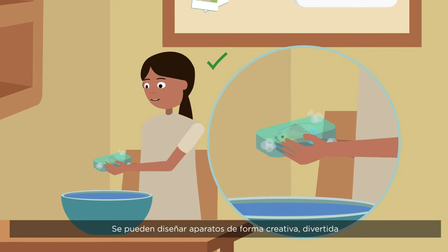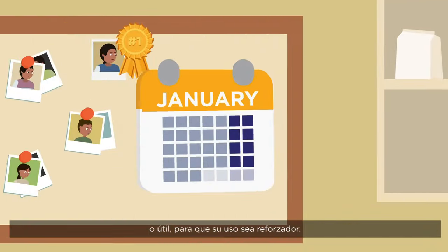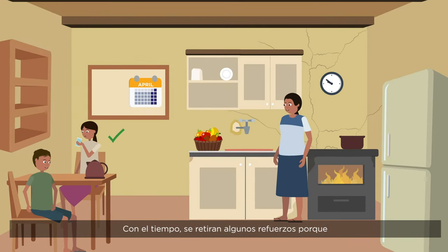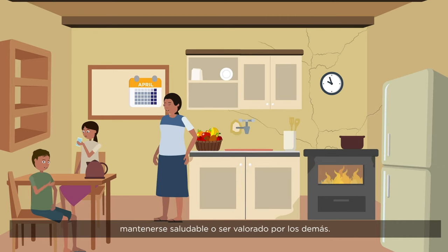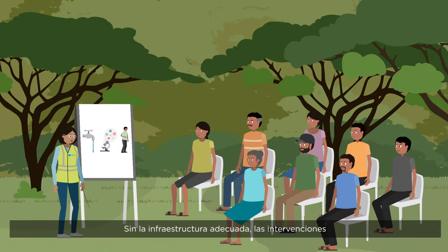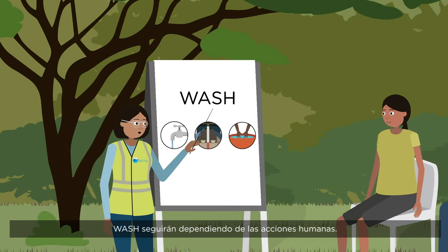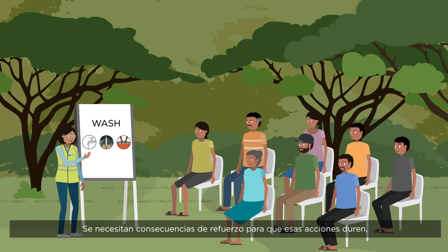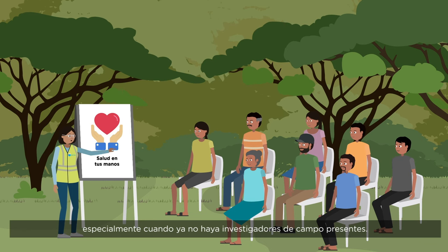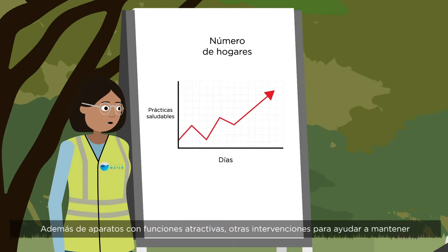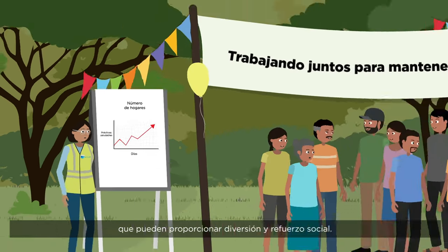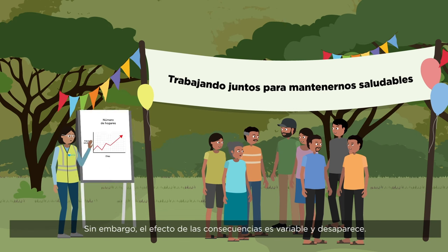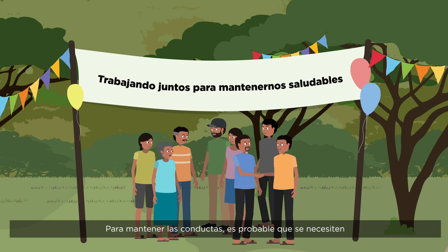Devices can be designed creatively in a funny or useful way so that using them is more reinforcing. Eventually, some reinforcers are discontinued because the goal is for behaviour to be maintained through naturally occurring reinforcers, such as staying healthy or being appreciated by others. Without adequate infrastructure, wash interventions will continue to depend on human actions. Reinforcing consequences are needed to maintain those actions, especially after field workers leave. Other interventions to help sustain positive behaviour include local wash groups, which can provide fun and social reinforcement. However, the effectiveness of consequences varies and fades, so multiple interventions and techniques are likely to be needed at different times to maintain behaviours.